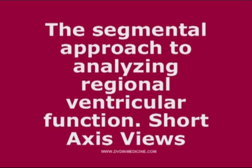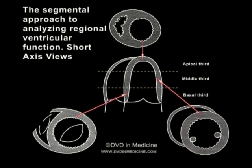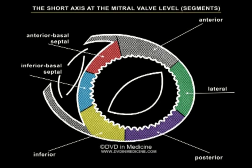The segmental approach to analyzing regional ventricular function uses four short axis views. The longitudinal and short axis examinations complement each other and give one the opportunity to look at essentially the same segments in more than one view. In longitudinal views, we divide the left ventricle into basal, middle, and apical thirds. The short axis at the mitral valve and papillary muscle levels are divided into six segments, whereas the short axis at the apex has four segments.